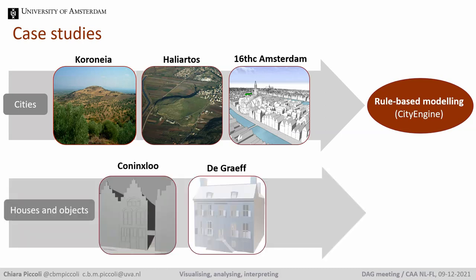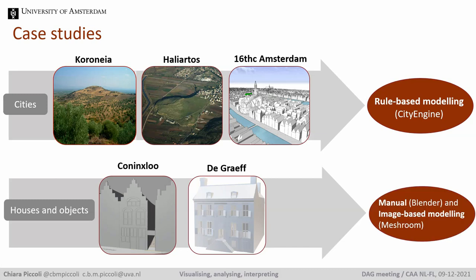In the second part of this presentation, we'll zoom in on individual houses and their interiors. Specifically, I'll talk about the reconstruction of the 17th century house of the painter Gillis van Koningslohe and that of the Amsterdam patrician Pieter de Graaf. In these cases the object of study are historical houses, and the characteristics of the data and the aims of the project called for a manual modeling approach, using the open source software Blender in combination with image-based modeling with the photogrammetric software Meshroom.